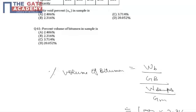Now question number 61 is a continuation of common data question of 60. In this question it is asked what is the percentage volume of bitumen in the sample.